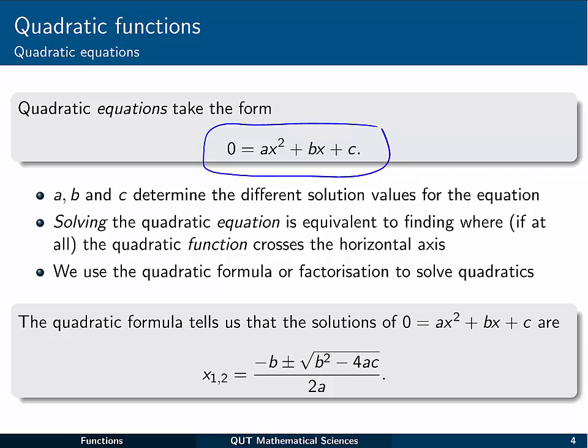And those places will be found by solving the corresponding quadratic equation. So how do we figure out what those values are? Well, we can use the quadratic formula. You've probably seen that before. That's this one down here. Otherwise you can use factorization. So some people are a little bit more handy at factorizing things than they are at using the formula or remembering it. And either one will work for you.